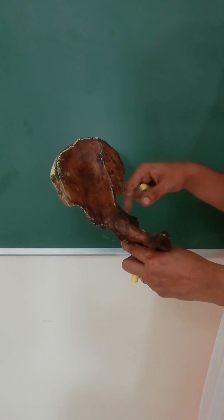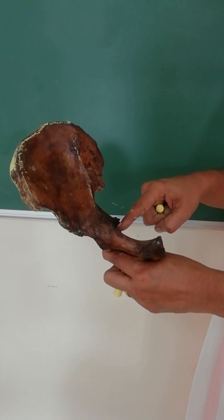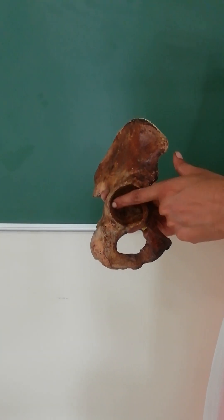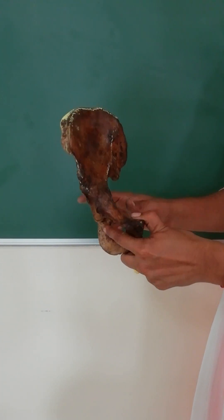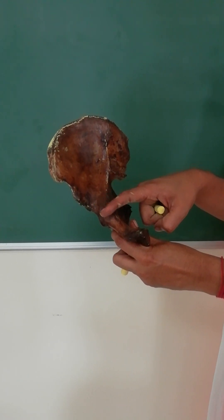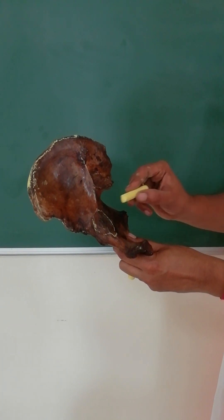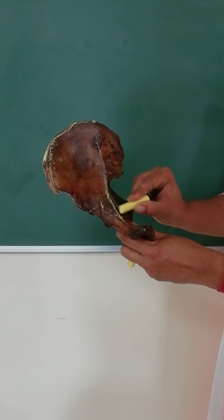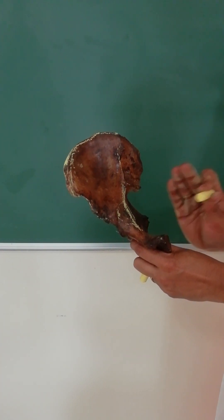Moving on to the lower end of the ilium: it joins with the pubis and ischium. In the posterior part is the acetabulum, which we will read about in detail. Here we have an eminence called the ileopubic eminence, and a line called the arcuate line present at the lower end.